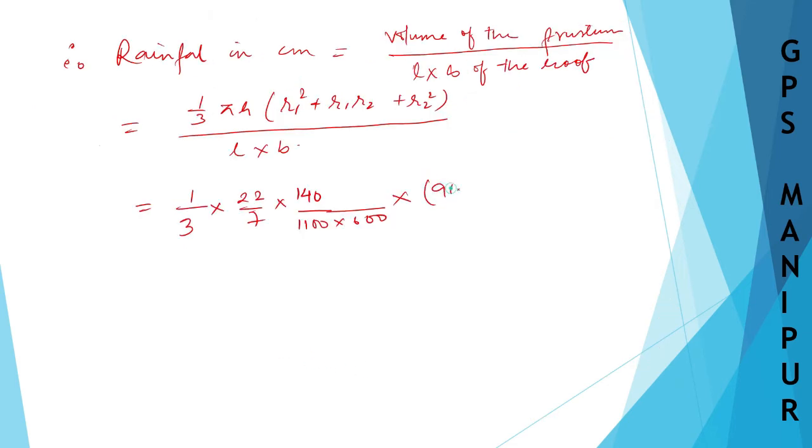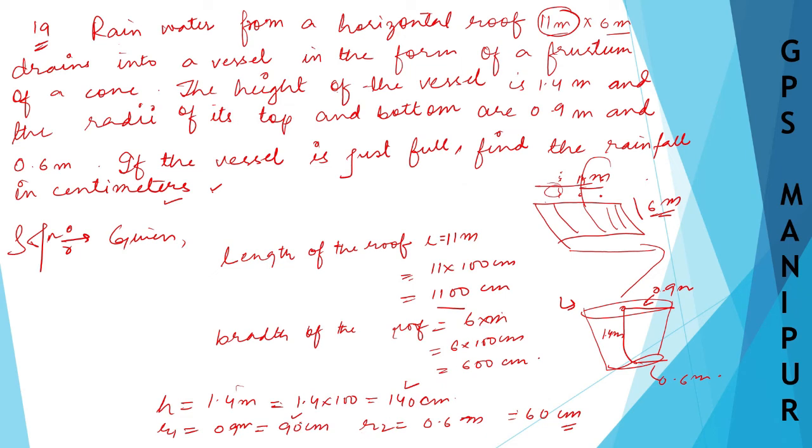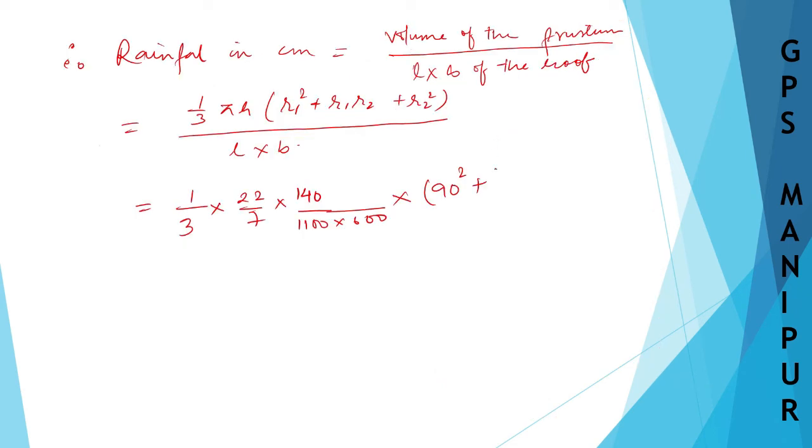Plus r1 × r2, that is 90 × 60, plus 90 × 60, plus 60².